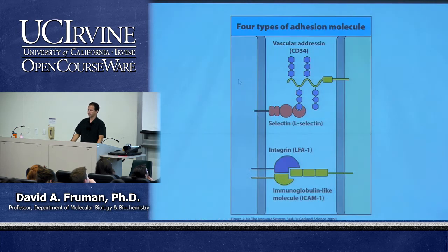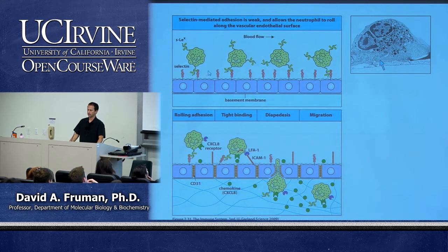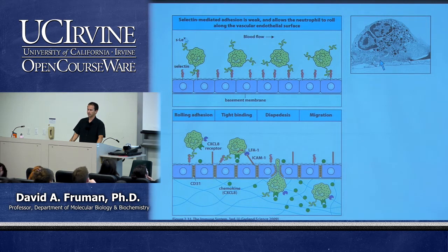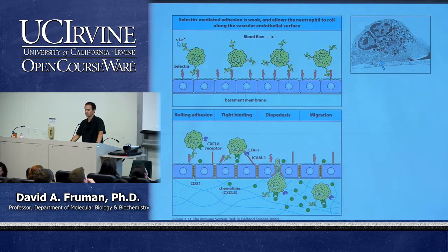For the most important rolling adhesion pair, the selectin is on the vascular endothelial cells and the vascular addressin is on the neutrophil. The carbohydrate linkages shown here are called Sialyl Lewis X — you won't have to remember that for the exam. Just know that carbohydrates on proteins on the surface of the neutrophil stick to the selectins, slowing them down so they roll along. Normally nothing further will happen at that point.